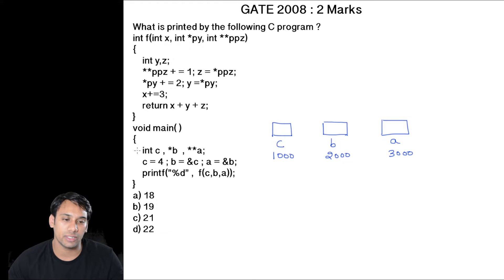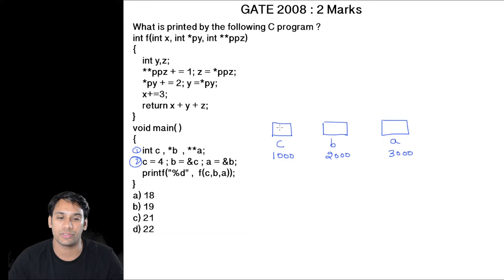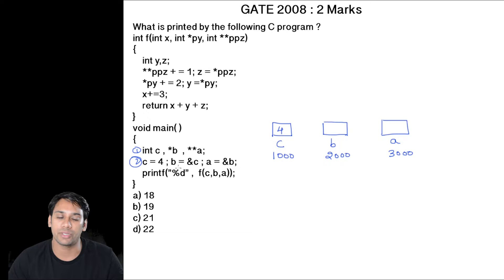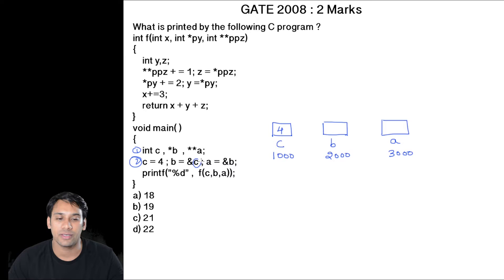In line number 2, the value stored in variable c is 4, so c is now going to store 4. The next statement is b = &c, which means we are going to store the address of variable c into b. Therefore, the variable b is now going to store 1000.